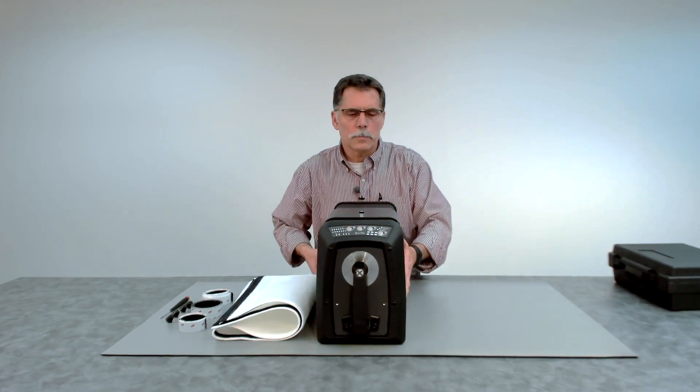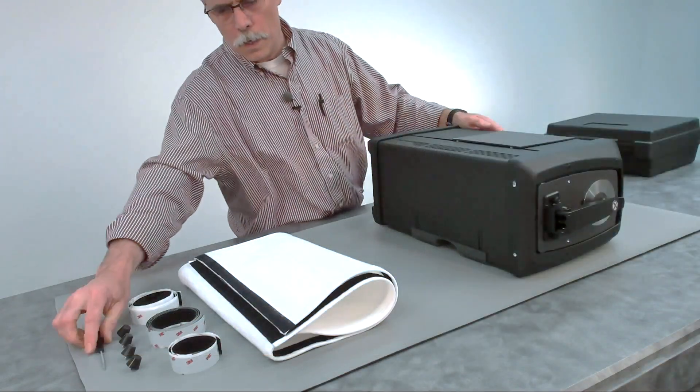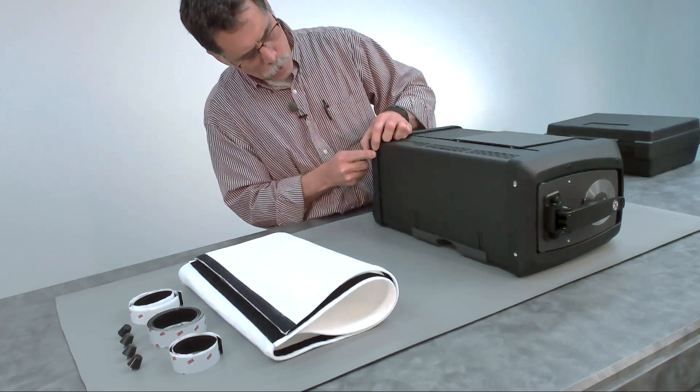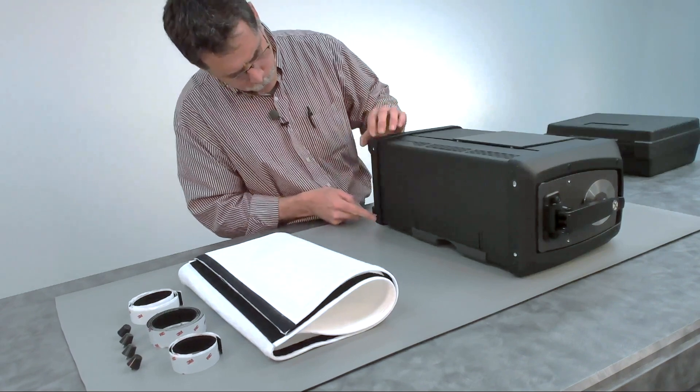The next step is to roll the instrument on its side, and you'll use a flat blade screwdriver to remove the inserts to expose the threads on the bottom.